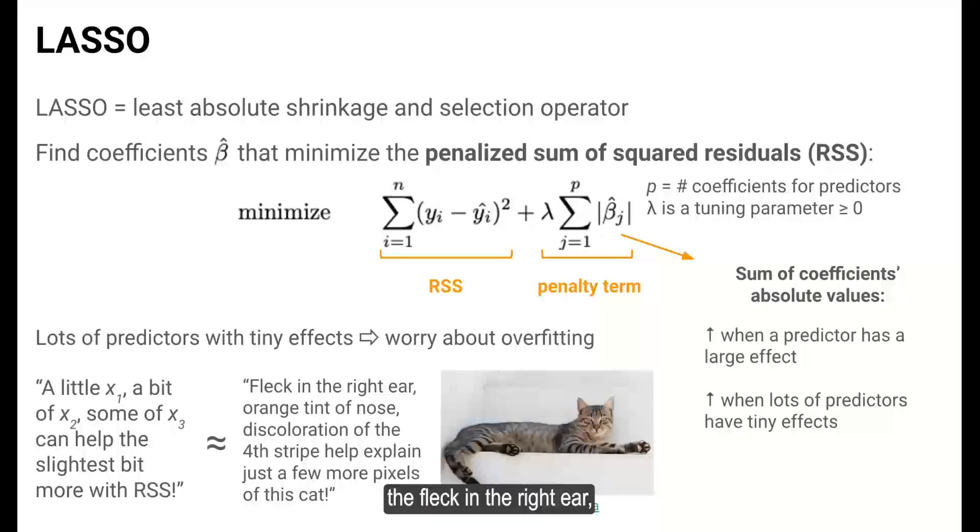The fleck in the right ear, the orange tint of the nose, the discoloration of the fourth stripe—all help me explain just a few more pixels of this cat picture.